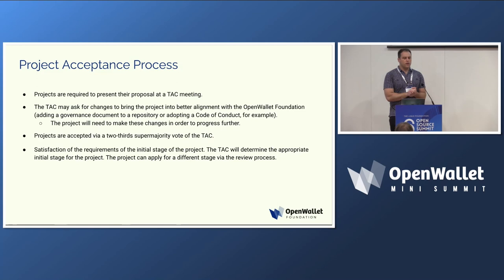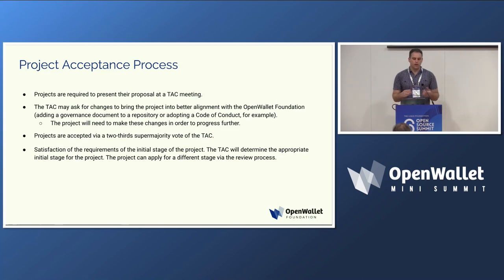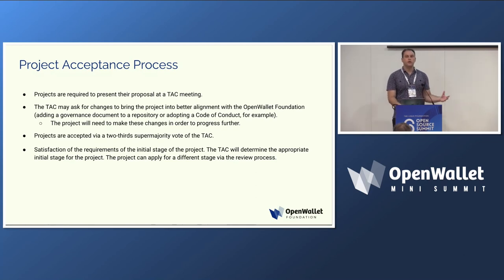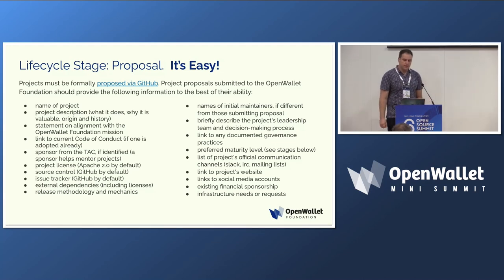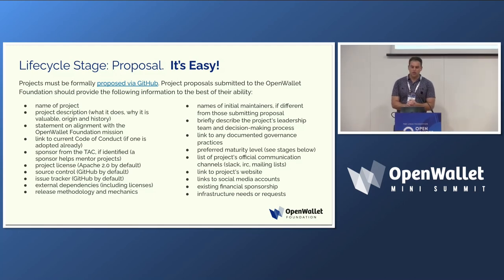The project acceptance process is really quite simple. It involves filling out some documentation and then presenting a proposal to the TAC. The TAC presentation is really more about telling everyone in the community what you're doing and looking for contributors. The TAC will determine the appropriate initial stage, but projects can also suggest which stage they think they should begin in. The proposal will take less than an hour if your project code is already open sourced — it is very simple and quite straightforward.